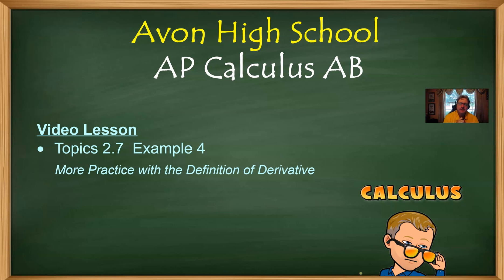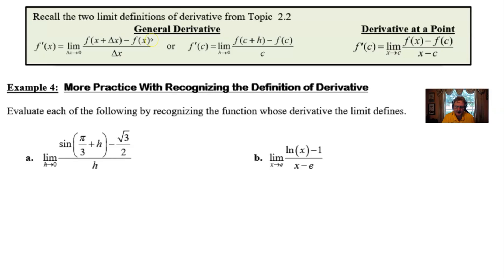Hello AP Calculus AB students, Mr. Record here for our final video for topic 2.7, talking about the derivatives of sine, cosine, natural log of x, and e to the x. But we're going to round out this video by revisiting our good friend, the definition of the derivative. So we got more practice with the definition of derivative. Let's take a look and see what we're talking about here.